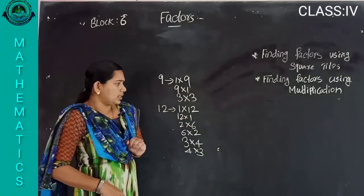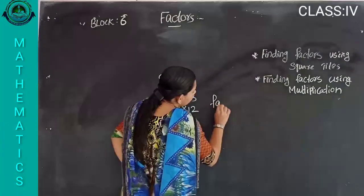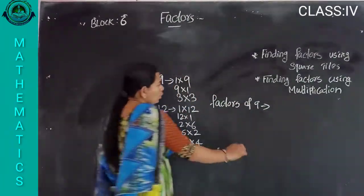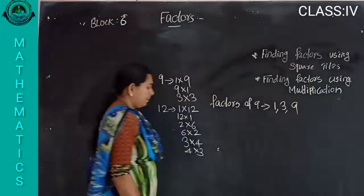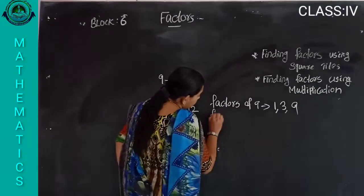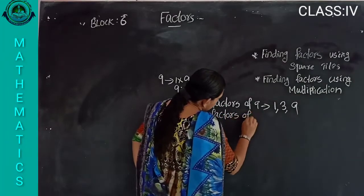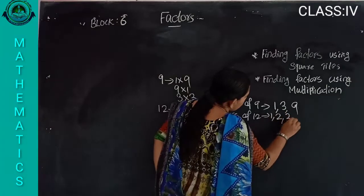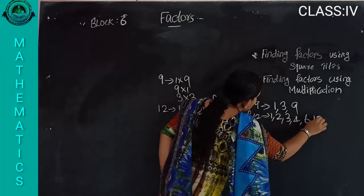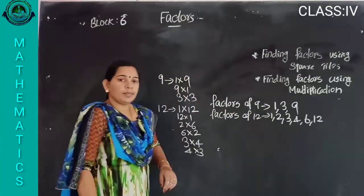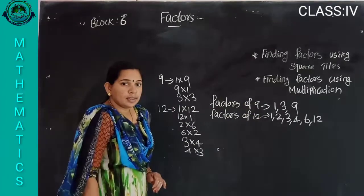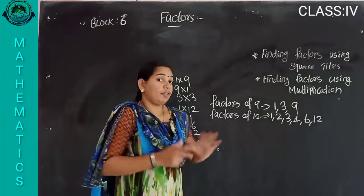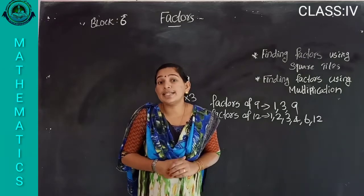From the factors of nine — which are one, three, nine — and the factors of twelve — which are one, two, three, four, six, twelve — some numbers are common. From these factors we are finding some common numbers. That is called the common factor.